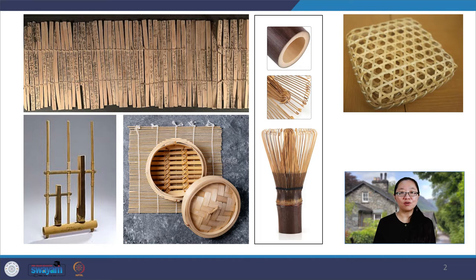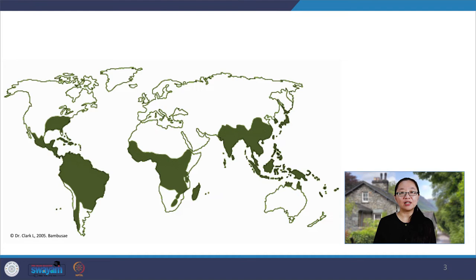It can be used as structural frame, floors, walls, partitions, doors, windows, roof rafters, as well as water pipes and scaffolding. Bamboo grows on almost all continents — from America, Africa, Asia, Southeast Asia, and the northern part of Australia, except Europe.